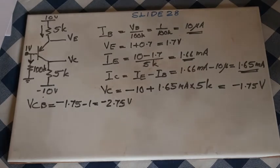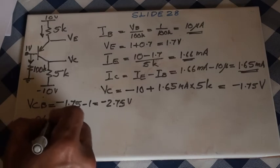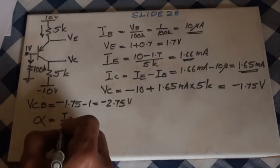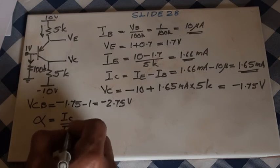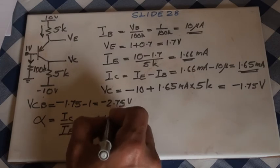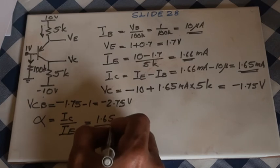VCB is less than 0, so it is definitely in reverse bias. Now the question is, how do you find alpha and beta? Alpha is IC over IE: 1.65 over 1.66.